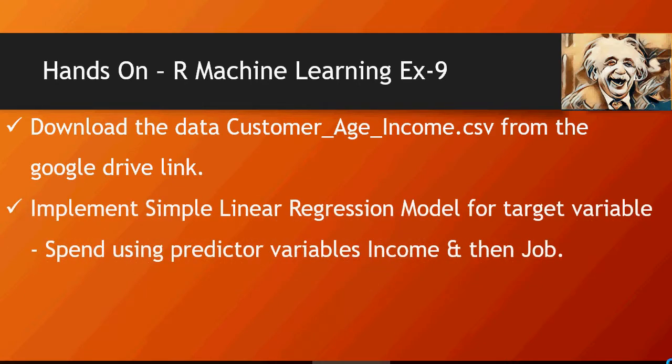Implement a simple linear regression model — that means one target variable and one predictor variable. Use income in one case, and then job as the predictor variable in the second case.